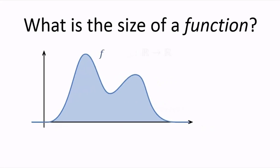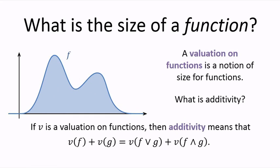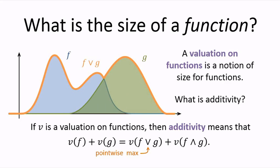Let's say that a valuation on functions is a notion of size for functions. What is additivity in this case? If v is a valuation on functions, then additivity means that v of f plus v of g equals v of the pointwise maximum of f and g plus v of the pointwise minimum of f and g.